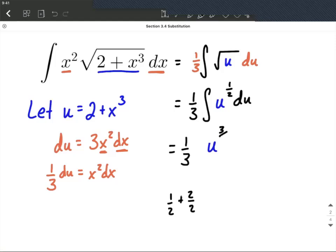This gives us 3 over 2 up in the exponent. Now typically, we divide by our new exponent. But in this case, instead of dividing by 3 halves, if we were to divide by 3 halves,